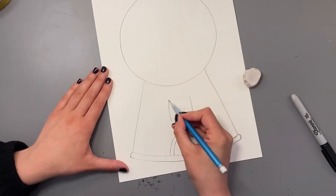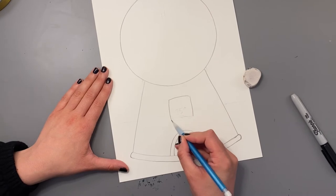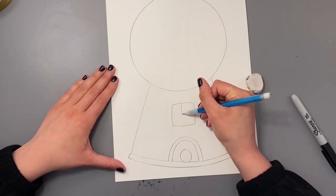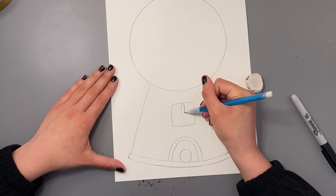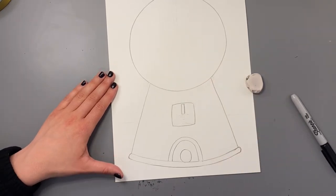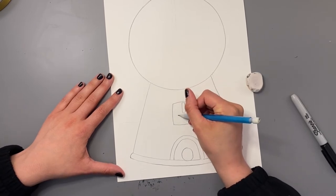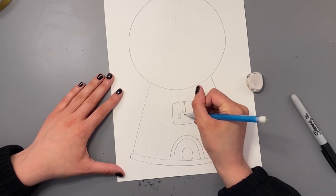After that, we can draw the part of the machine where you would put your money in. So I'm drawing a square shape and then I'm going to draw a tall, skinny little rectangle here. That will be where you'd put your coins in. Below that, I'm going to put how much a gumball is. So I'm going to make mine 25 cents.